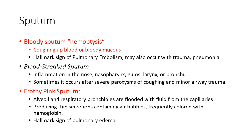Another assessment is sputum production. Bloody sputum or hemoptysis — coughing up blood — is a hallmark sign of pulmonary embolism. Blood-streaked sputum is often seen with very severe coughing bouts causing small airway traumas or barotrauma. Frothy pink sputum occurs when alveoli and respiratory bronchioles are filled with fluid, as in ARDS or pulmonary edema — air bubbles mix with the fluid, and when expectorated it creates pink frothy sputum, a hallmark sign of pulmonary edema.